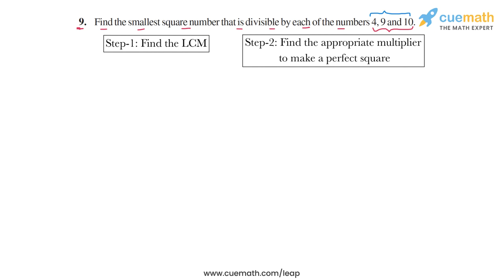And it will also be a perfect square. So let me show you both of these steps. In the first step, we have to find the LCM of 4, 9, and 10. So we write the prime factorized form of each number. So 4 is equal to 2 into 2, 9 is equal to 3 into 3.